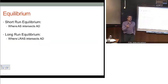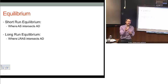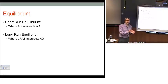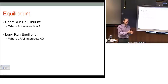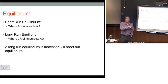Just like our notion of a short-run and a long-run aggregate supply curve, that's also going to lend itself to a split notion of what an equilibrium looks like. We can have a short-run equilibrium where the aggregate demand curve intersects the short-run aggregate supply curve. We can also have a long-run equilibrium, which is where our aggregate demand curve is going to intersect the long-run aggregate supply curve. A long-run equilibrium has to be a short-run equilibrium, but not necessarily the reverse is true.